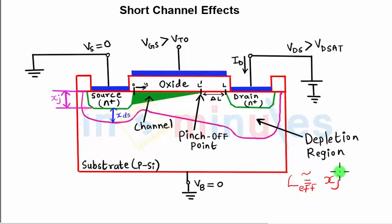Now let's understand what the effective length is. L effective is the total channel length minus delta L, and delta L is the reduction in channel length due to the transistor operating in the saturation region.